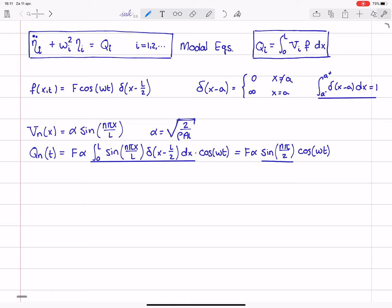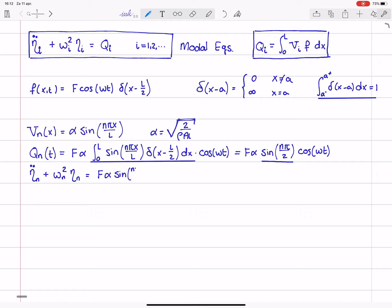Good. So, now we know the modal force. That means that the modal equations become eta n double dot plus omega n squared times eta n equals f times alpha times the sine of n pi divided by 2 times the cosine of omega t.